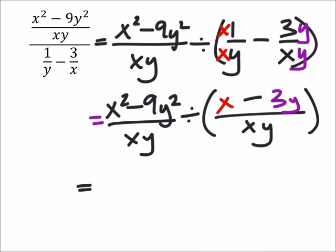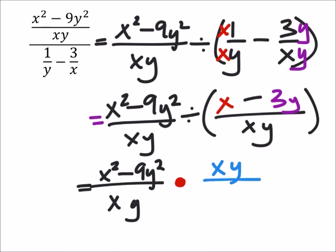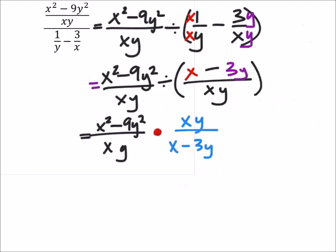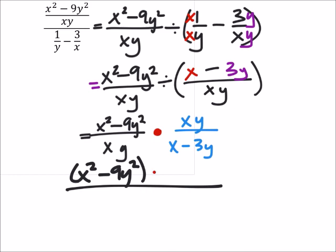So since I'm dividing now by one full fraction, I can reciprocate it. I'm going to change this to multiplication by reciprocating that fraction. I have xy over x minus 3y. Let's make this one full fraction: I've got x squared minus 9y squared times the xy, that's all over xy times x minus 3y.